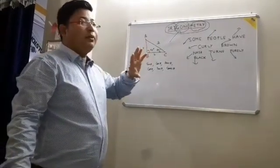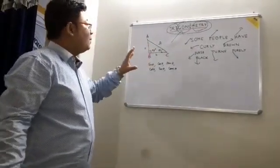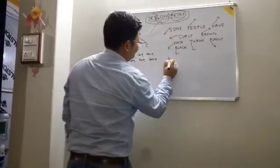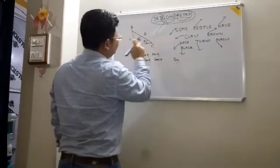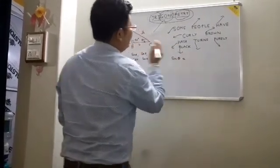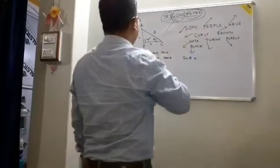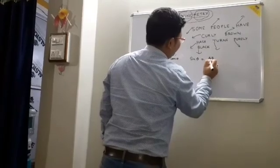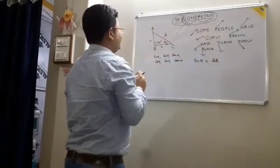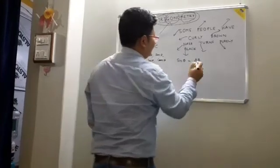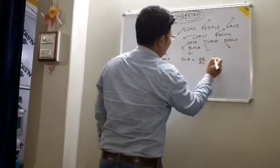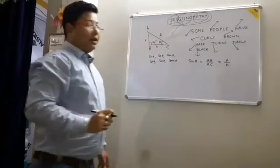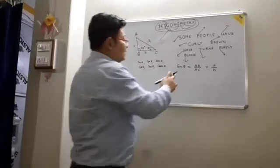Through this line you will come to know trigonometry. 'S' represents sine theta. Sine theta is equal to P — P for perpendicular, which is AB — divided by H, the hypotenuse, which is AC. So sine theta equals P by H. S for sine, P for perpendicular, H for hypotenuse.